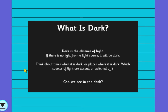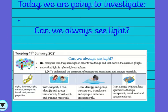Can we see in the dark? If there is an absence of light, can we see? So today we are going to be investigating: can we always see light? And this is our success criteria that we're working on from in school. You will notice I said there are three very important words that we're going to be discussing today.